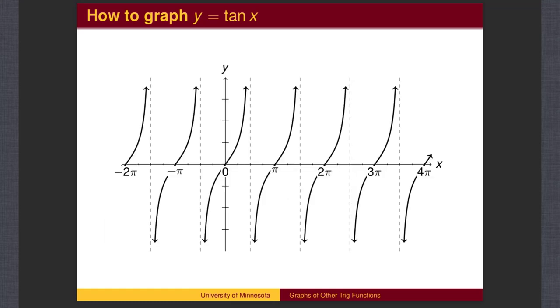The tangent values at 3 pi over 4, pi, and 5 pi over 4 repeat the same pattern as before, namely the values are negative 1, 0, and 1 respectively. Thus, the branch of the tangent function between pi over 2 and 3 pi over 2 is identical to the branch from negative pi over 2 to pi over 2.